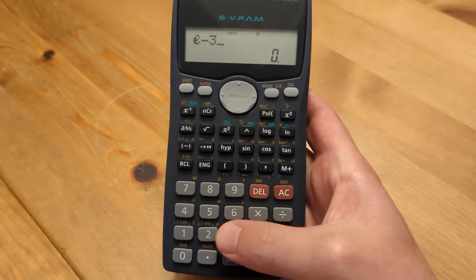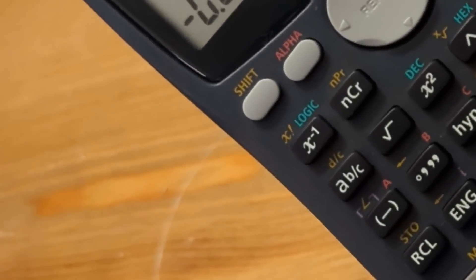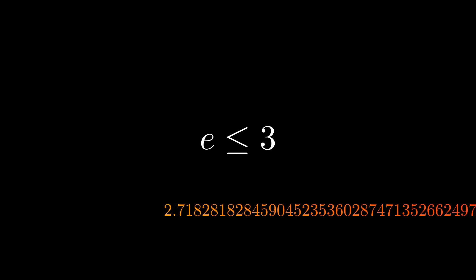E minus 3 equals... We're going to prove that e is less than or equal to 3. Why would we bother proving something so obvious?